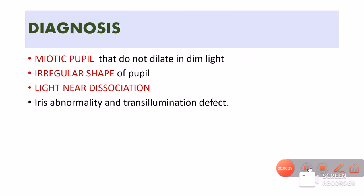To summarize, Argyle Robertson pupils are miotic pupils that will not dilate well in dim light. They have an irregular shape, there is light-near dissociation, and there may also be iris abnormalities or transillumination defects. That was all about Argyle Robertson pupils. Stay tuned to the abnormal pupillary reaction series. Thank you and have a nice day.